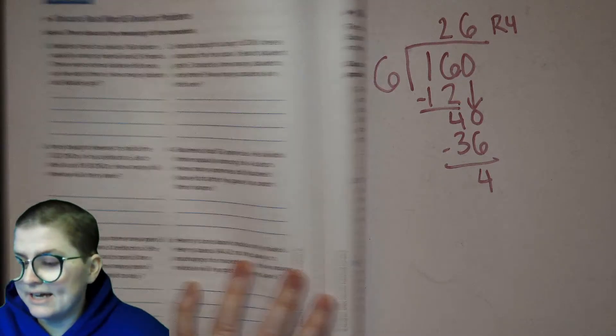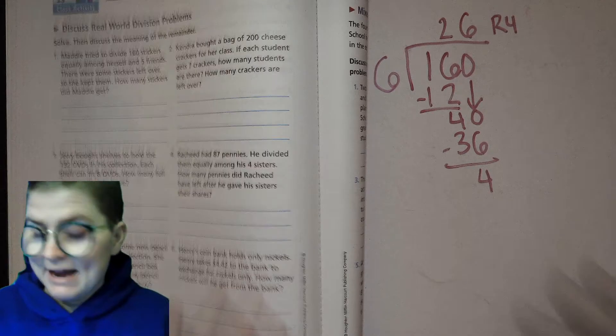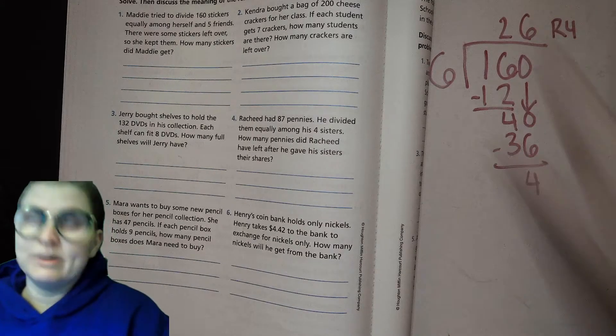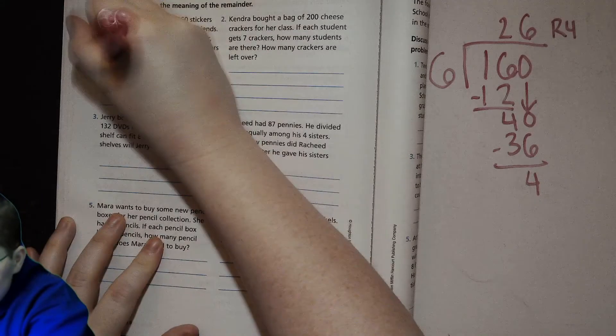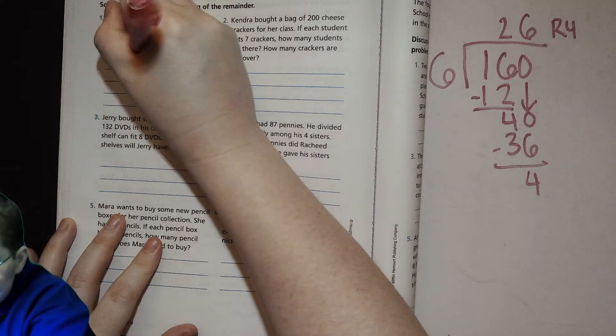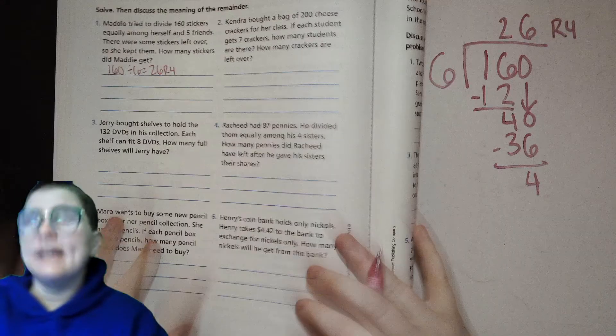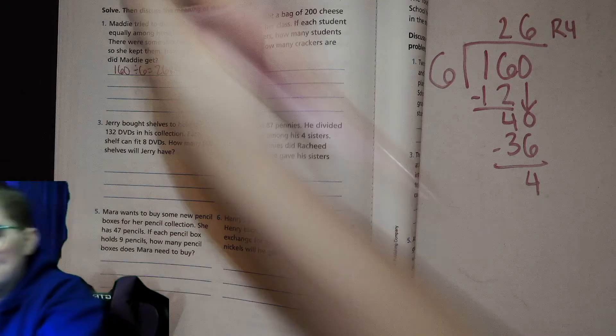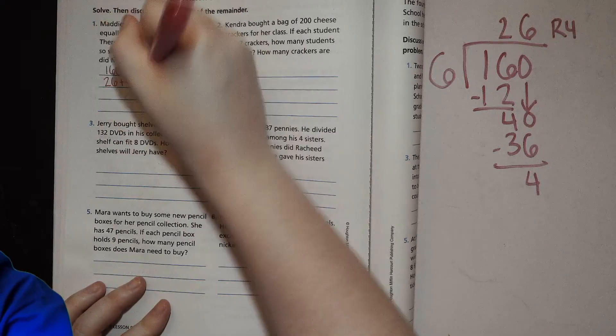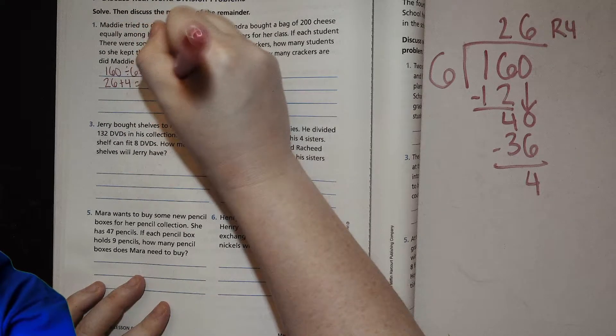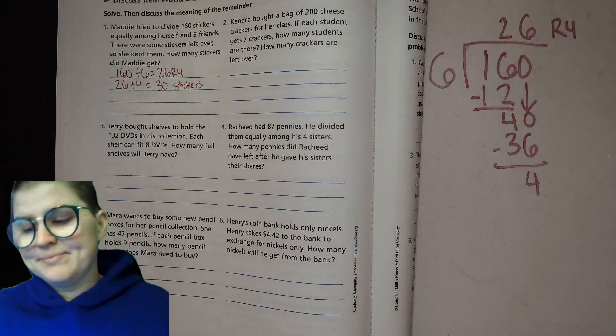The question is saying there are some stickers left over, so she kept them. How many stickers did Maddie get? If she and everyone got 26 and then she kept the leftover ones, we'll write that down: 160 divided by 6 equals 26 remainder 4. And then we're gonna take that remainder and add it to what Maddie got. So then we'll have 26 plus 4, which is 30 stickers. So in that case we actually use that remainder to add to what she got.